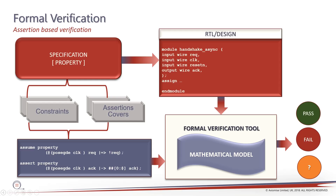In some cases you get question marks — unknown results — meaning the proof results were not convergent. Formal verification methodology is all about understanding the interplay of how you write your properties, how you model them, what you do with the unknowns, what you do with the fails, what you do with the passes. If you have a good solid understanding, you can obtain really good, high-value, scalable results.